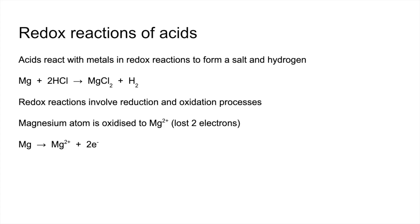Those two electrons are gained by the hydrogen ions in the HCl. And they become hydrogen atoms and then combine to form an H2 molecule. So each hydrogen ion is reduced to a hydrogen atom. And they do that by gaining one electron each. And there's the half equation to represent that.